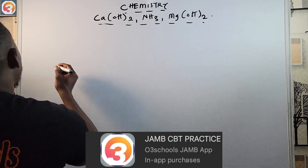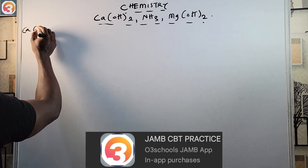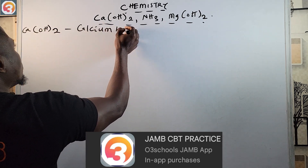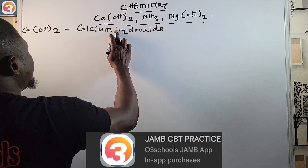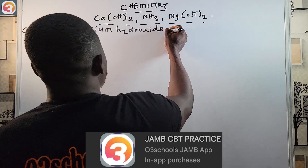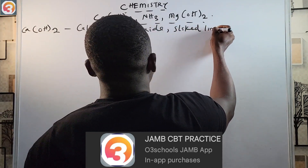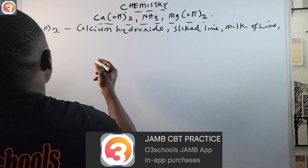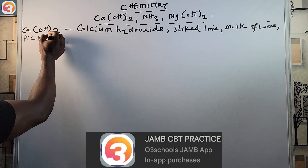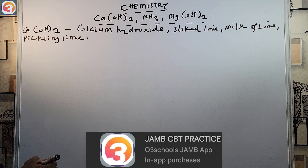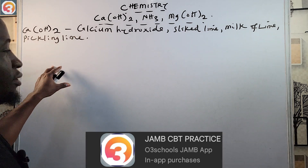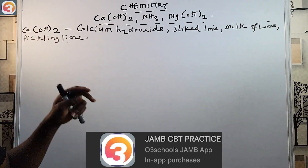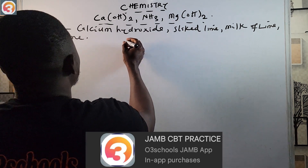Let's start with the first one, which is calcium hydroxide — Ca(OH)₂. It is also called slaked lime, milk of lime, and pickling lime. So these are the names for calcium hydroxide. Now let's see the uses.